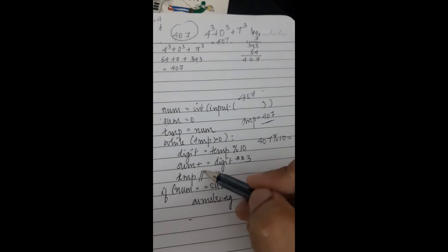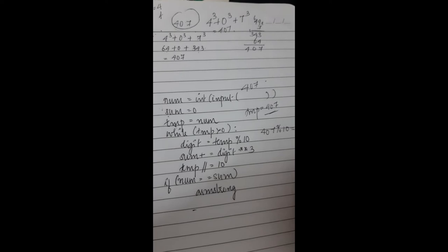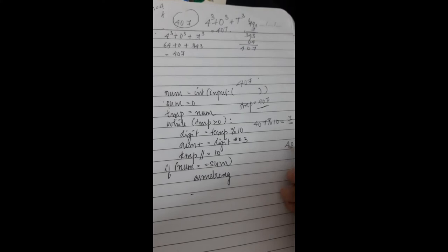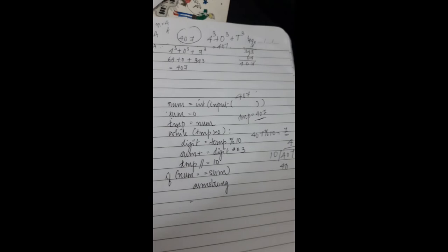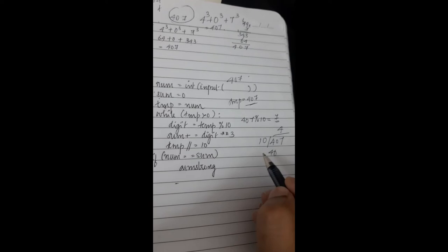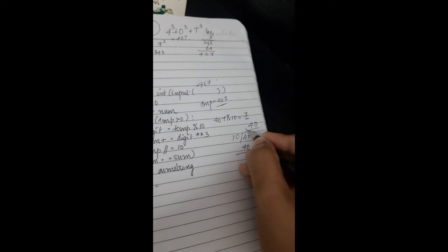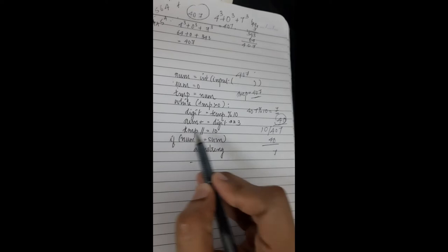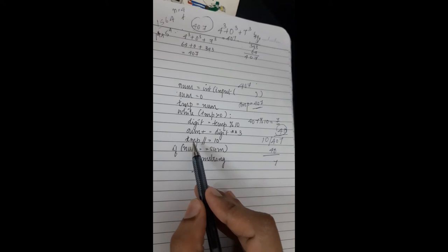Now look at the next step: temp double slash 10. The double slash is floor division — it gives you the quotient but only the integer part. Presently temp is 407. When you divide 407 by 10 with floor division, you get 40. That seven has gone off because you did temp equals temp floor-divided by 10. So now your new temp value will be 40.